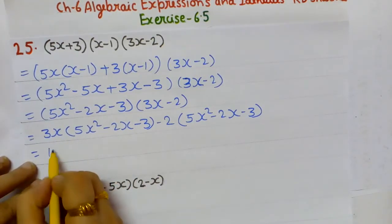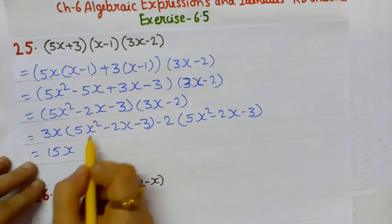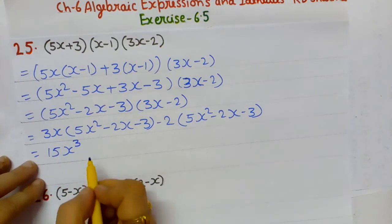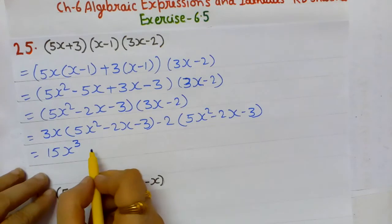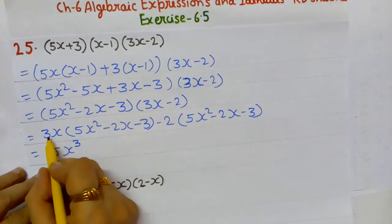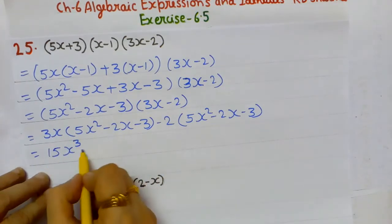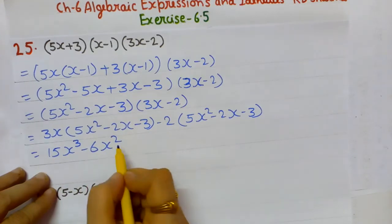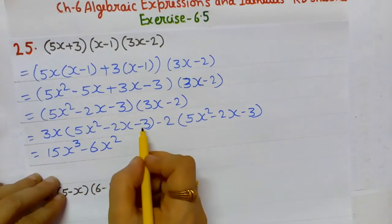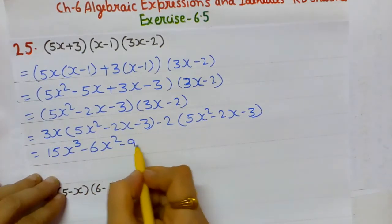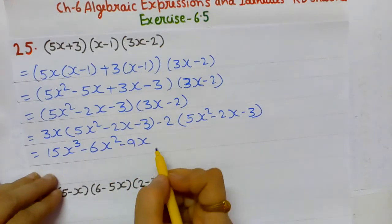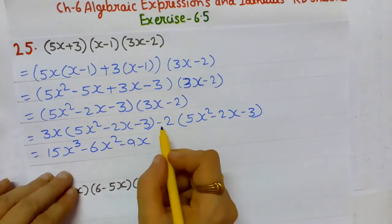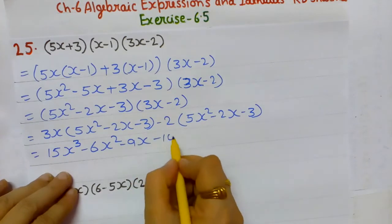Multiplying 3x by (5x² - 2x - 3): 3×5 = 15, so 15x³ (powers add in multiplication); 3x × (-2x) = -6x².